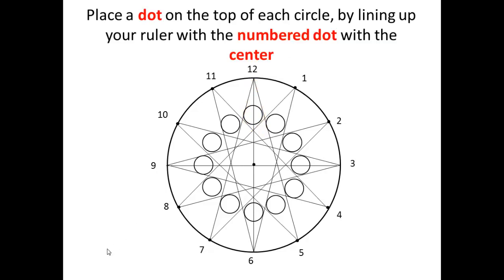So now, what you're going to do is place a dot on top of each circle, but you're not going to guess where to put the dot. You will do it exactly and precisely by lining up your ruler with a numbered dot. Let's start with one. Here's the numbered dot. Line it up with the center. So this dotted red line on the screen represents your ruler. You're not actually drawing that line. It's a ruler sitting there. Now take your pencil and put a dot right there on top of the circle, right where the red line meets the circle.